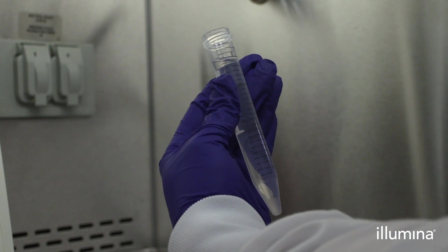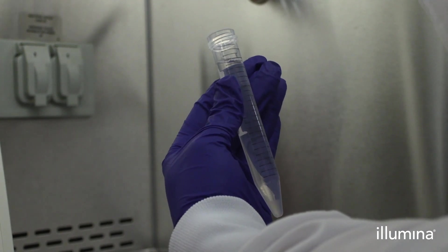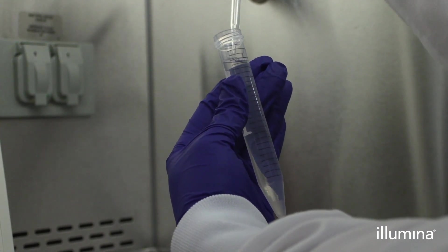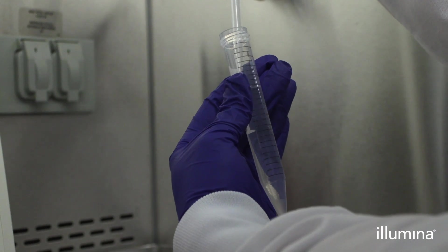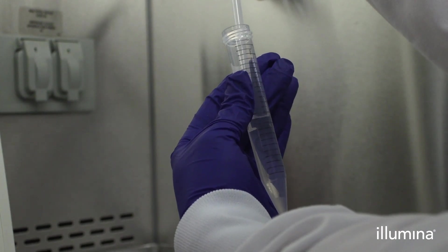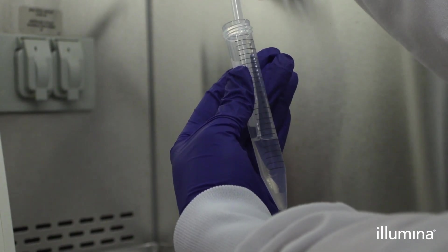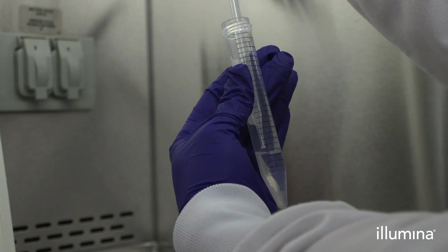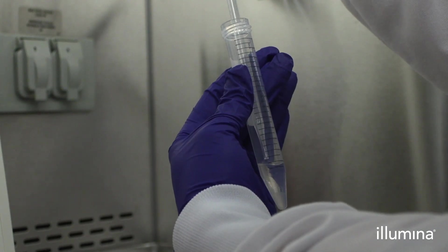Remove supernatant until approximately 1 ml of washing buffer remains. Do not disturb the packed pips at the bottom of the tube. Add 12 ml more of 1x wash buffer and repeat these steps to perform 3 total washes before moving on to volume regulation.